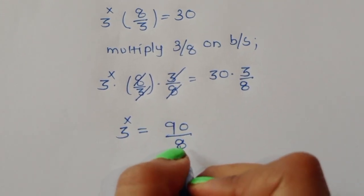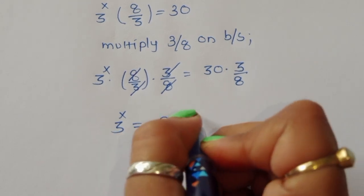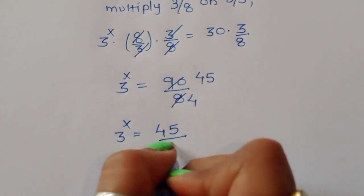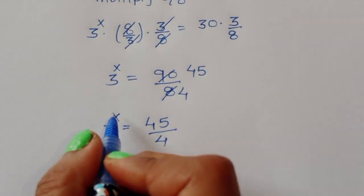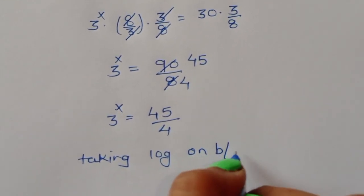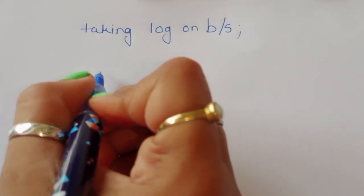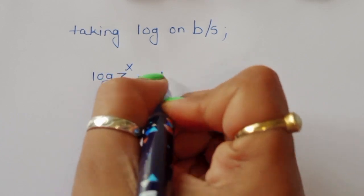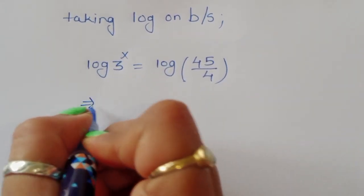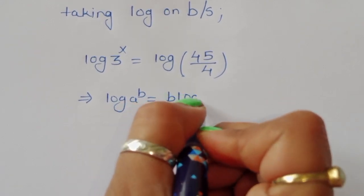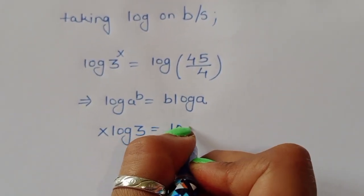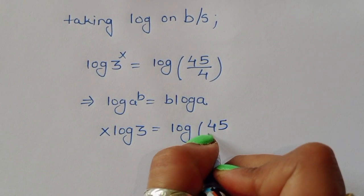Now we take the log of both sides: log(3^x) equals log(45/4). We apply the formula log(a^b) equals b·log(a), so x·log(3) equals log(45/4).